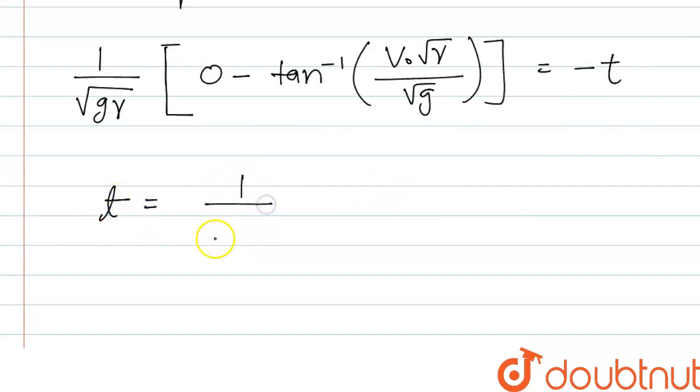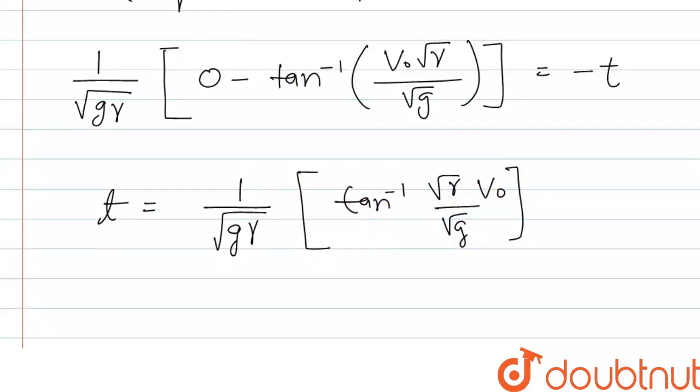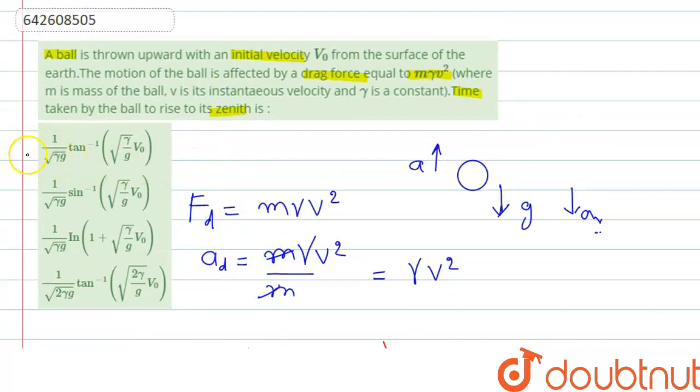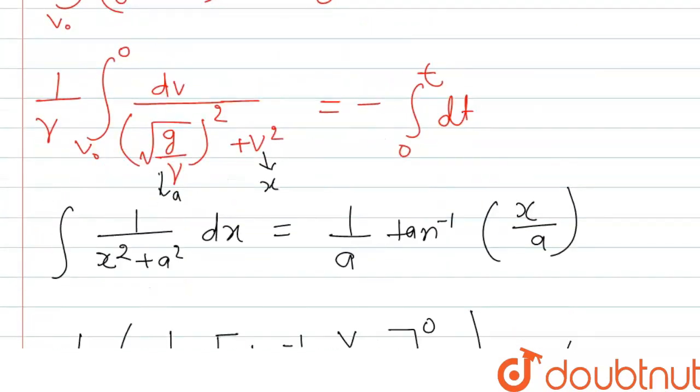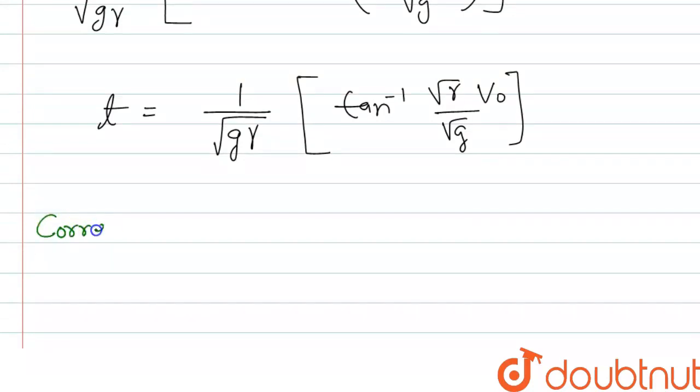t equal to one by root under g into gamma, and in the bracket we can write tan inverse root under gamma by root g into v naught. And if we check the option, so the option first is correct. So this option is the correct option. So we can write t equal to one by root under g gamma, tan inverse root under gamma by g into v naught. Thank you.